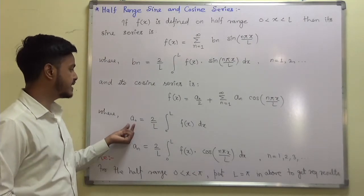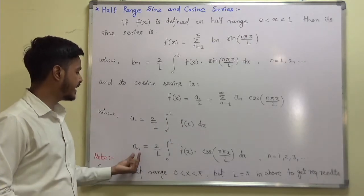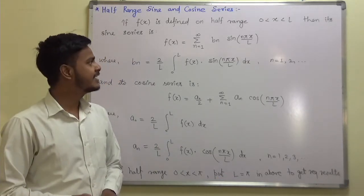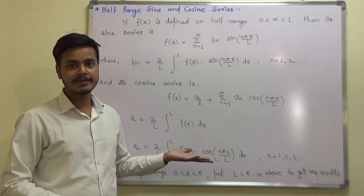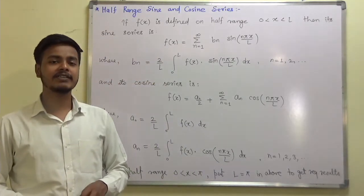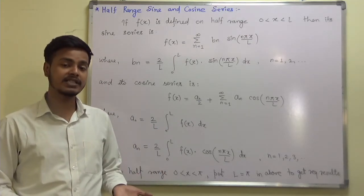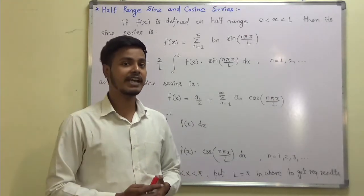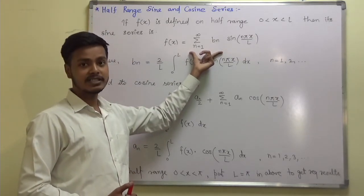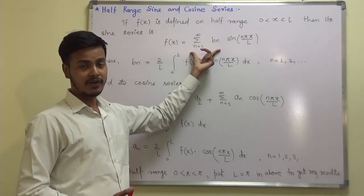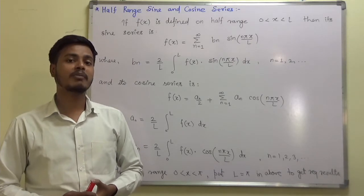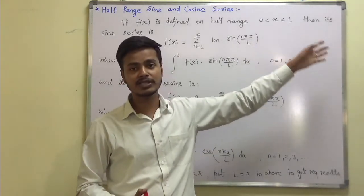Likewise, we have the half range cosine series, which involves Fourier coefficients a₀ and aₙ. Here a₀ = (2/l) ∫₀ˡ f(x) dx and aₙ = (2/l) ∫₀ˡ f(x) cos(nπx/l) dx. You may be wondering that we have already done this in even and odd functions — just the matter of writing is different. There we write a₀ and aₙ as 0 for the Fourier series for an odd function. The half range sine series is the same as the Fourier series for an odd function; the only change is the interval. Previously we had −π to π or −l to l; here we have 0 to l or 0 to π.